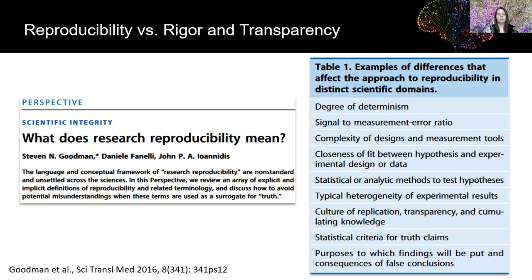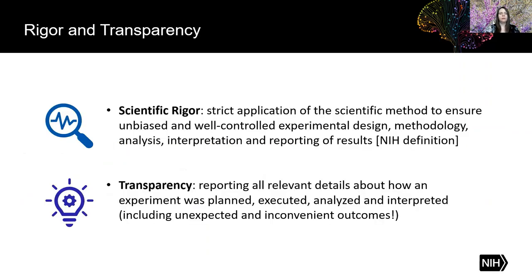All of the things listed on this slide can affect reproducibility of an experiment — for example, your signal-to-noise ratio, the complexity of the design, your statistical methods, and the heterogeneity of your experimental results. This is why we at NINDS advocate for high-quality experimental design through scientific rigor and transparent reporting of methods and results, instead of for reproducibility per se.